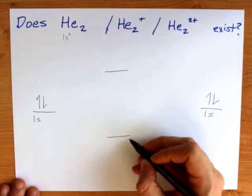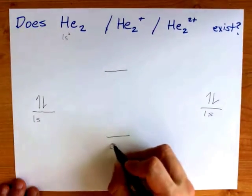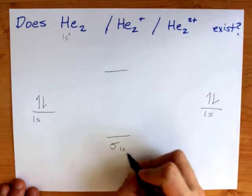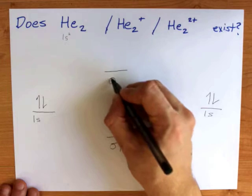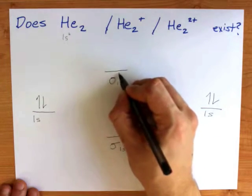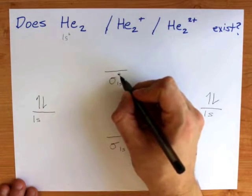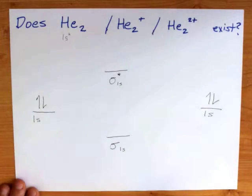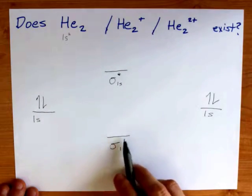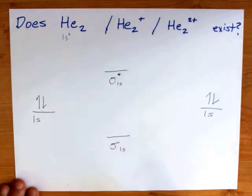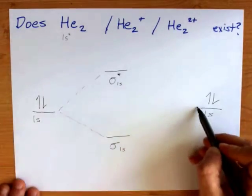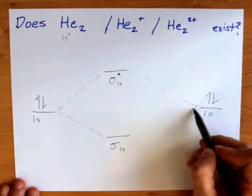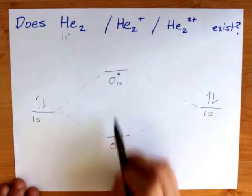One is lower in energy and we're going to call it sigma 1s, and one is higher in energy we're going to call it sigma 1s star. The star represents an anti-bonding orbital and no star represents a bonding orbital. The two atomic orbitals have overlapped to make these two molecular orbitals.